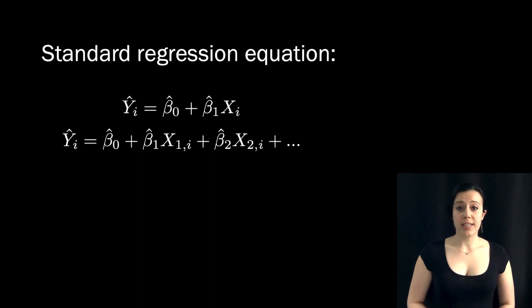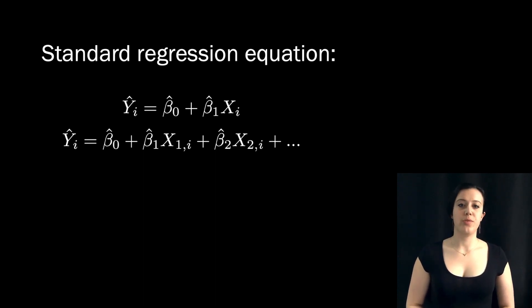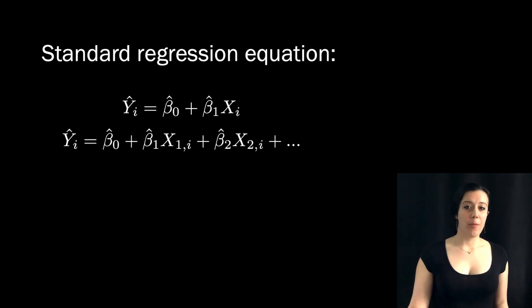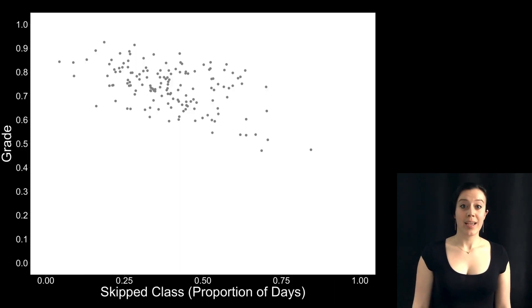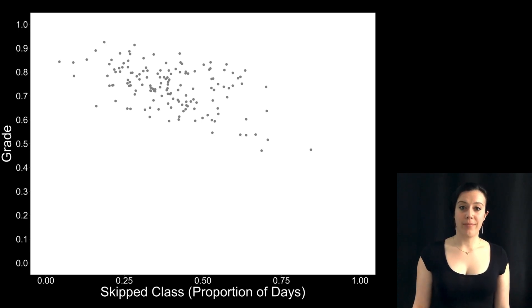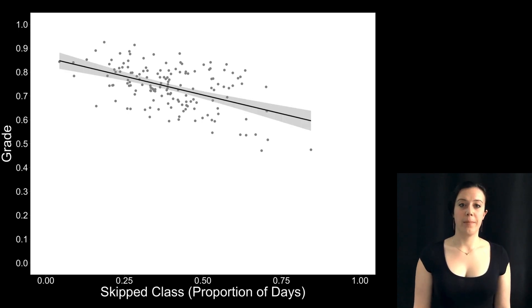For example, maybe we're interested in whether skipping class is related to a student's grade. We'd expect that the higher the proportion of classes you skip, the lower your grade will be. Like this. And if we fit a regression line to these data, this is what it looks like.